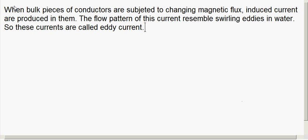When bulk pieces of conductors are subjected to changing magnetic flux, induced currents are produced in them. The flow pattern of these currents resembles swirling eddies in water, so these currents are called eddy currents. In the coming session we will see how to reduce eddy currents and discuss their advantages, disadvantages, and applications. For example, in a transformer the eddy current is a disadvantage — we will cover these things in the next session.